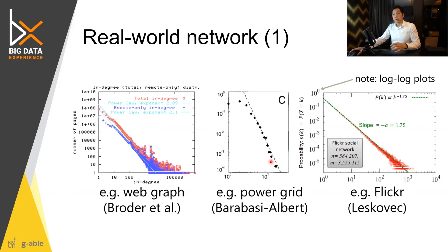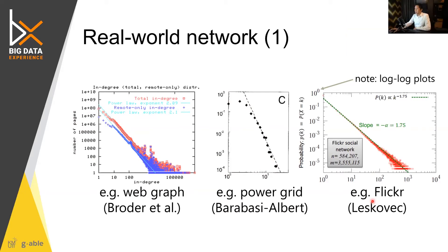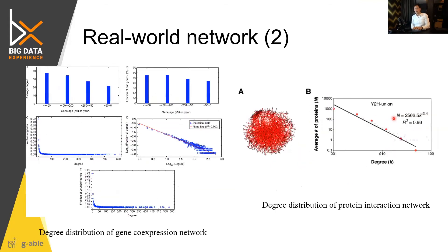For the Flickr social network, they also find that using a log-log plot, you get roughly a linear relationship with a specific slope.